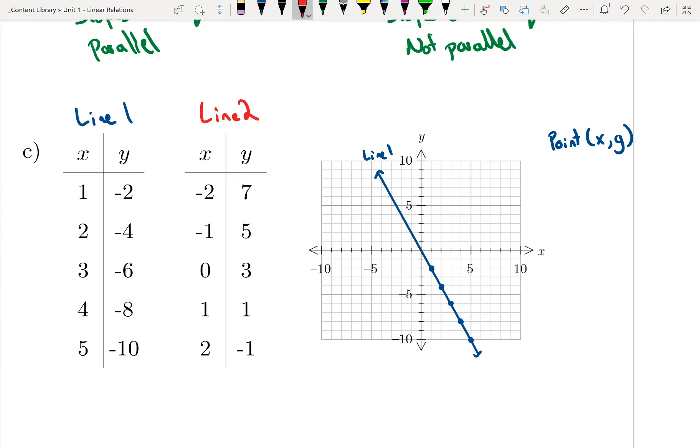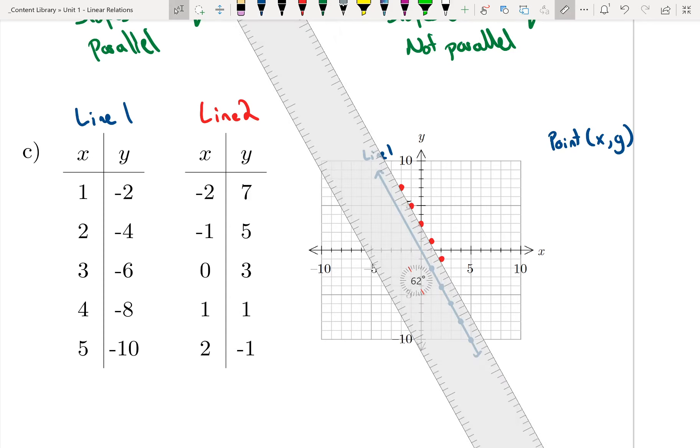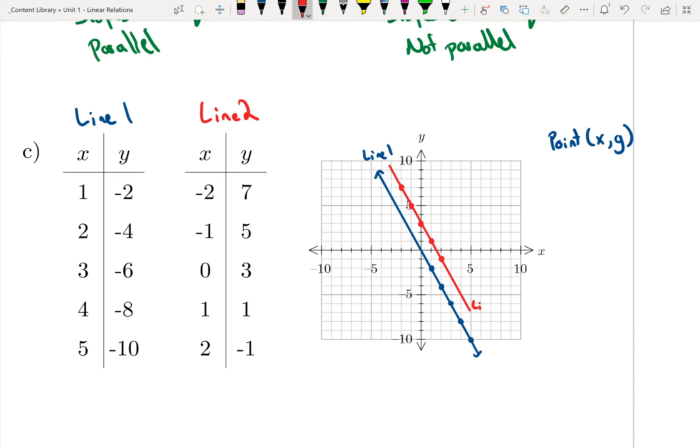My second line, same idea. I'm going to plot the points. So negative 2, 7. Negative 1 and 5. 0 and 3. 1 and 1. 2 and negative 1. I'm going to take these points, connect them with a line. So this is line 2.